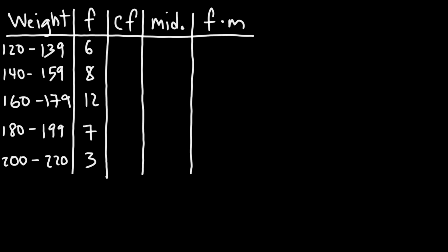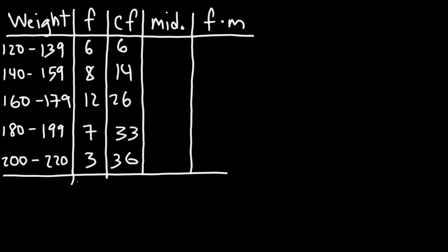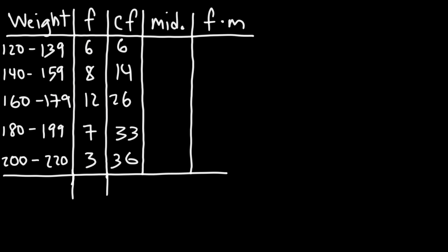Let's begin by calculating the cumulative frequency. Starting with 6, then 6 plus 8 is 14, then 14 plus 12 is 26, then 26 plus 7 is 33, and 33 plus 3 is 36. Taking the sum of the frequency values also gives us 36.